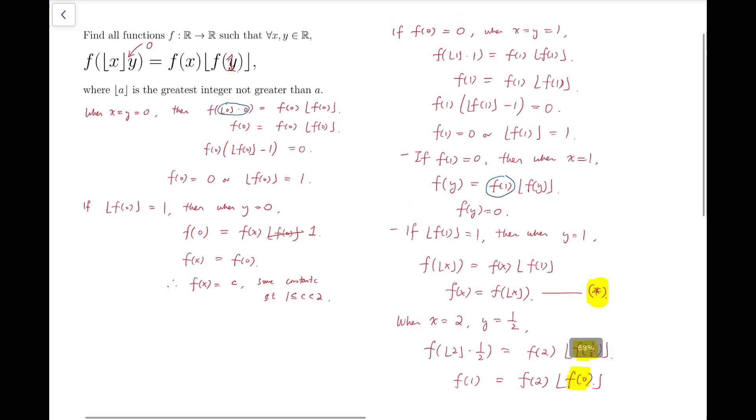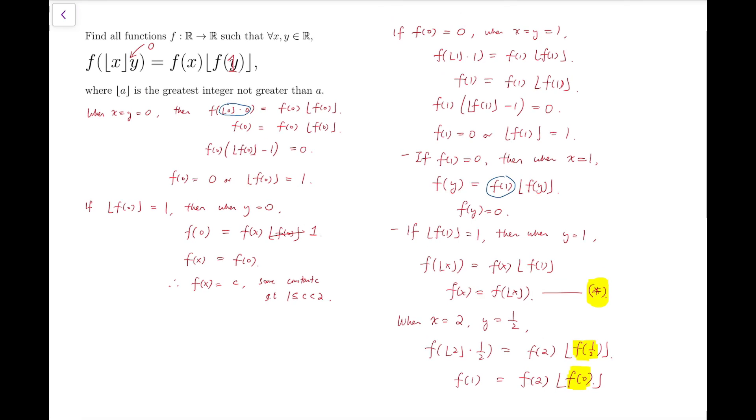And we know that under this big case, f of 0 is actually 0. So f of 1 equals 0. But this contradicts the fact that we assumed at the same time the floor function of f of 1 is equal to 1. So we have a contradiction here.